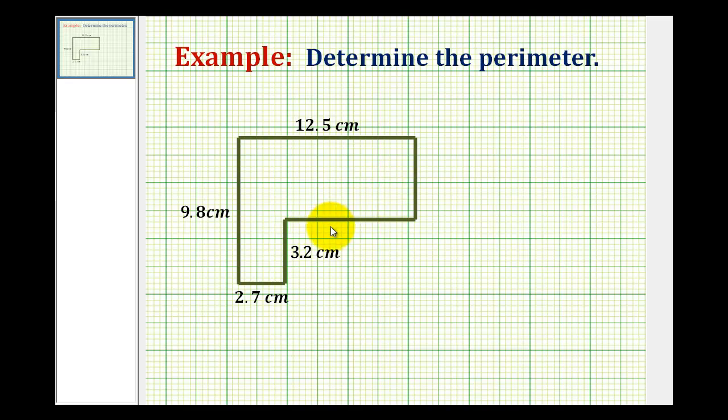But when we take a look at this polygon, notice that we're not given the length of this side here, or this side here. So we'll have to do some analysis before we can determine the perimeter.